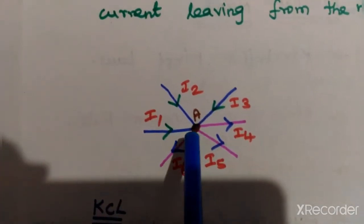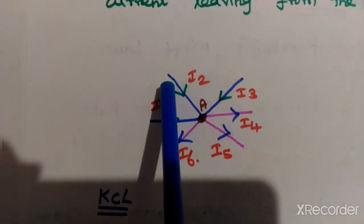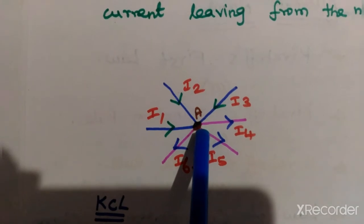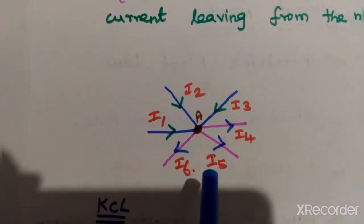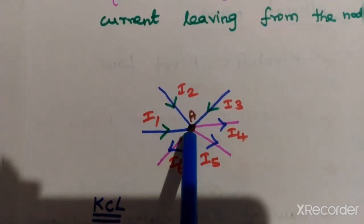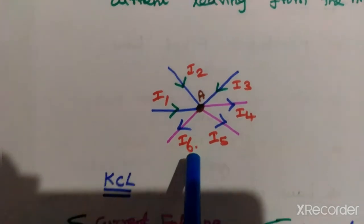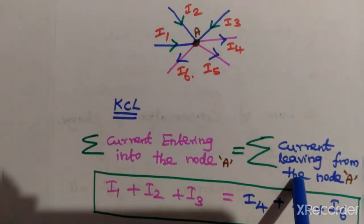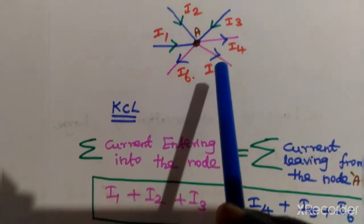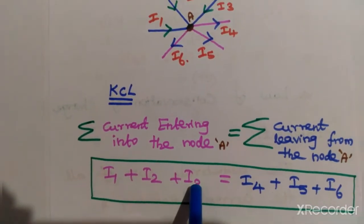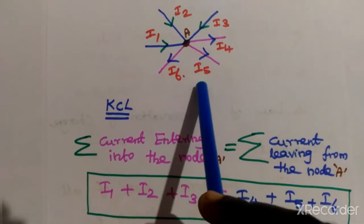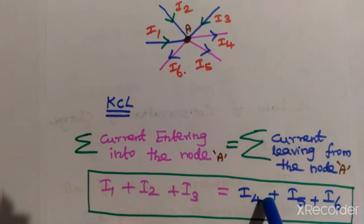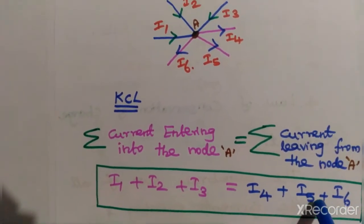Consider node A. The currents entering the node are i1, i2, and i3 — shown by arrow marks pointing toward the node. The currents leaving the node are i4, i5, and i6 — shown by arrow marks pointing away from the junction. According to KCL, i1 plus i2 plus i3 equals i4 plus i5 plus i6.